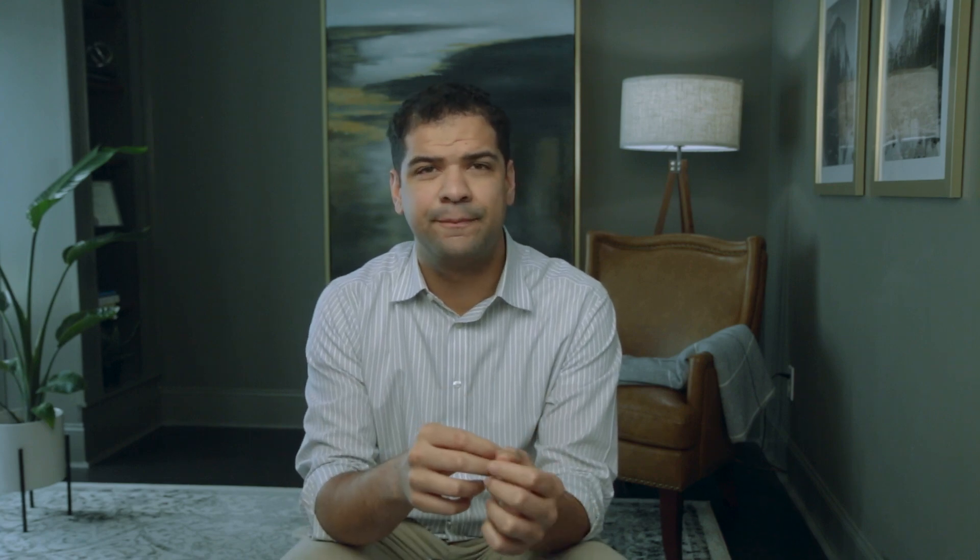Let's look at a CIDR chart to understand the relationship between the suffix and the range of IP addresses. As you can see, as the suffix increases, the range decreases, and vice versa. You could use a chart like this to help you as you work with IP addresses, until you become familiar with some of the most common CIDR ranges.